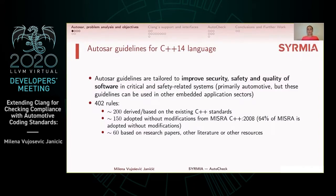AUTOSAR guidelines for the use of the C++14 language in critical and safety-related systems propose rules that are tailored to improved security, safety, and quality of software. These rules are primarily aimed at the automotive industry but can be used in other embedded application sectors. There are 402 rules within these guidelines. One half of them are derived from existing C++ standards. Around 150 rules are adopted without modifications from another important safety-related standard called MISRA C++, which dates from 2008. About 60 rules are based on research papers and other literature.